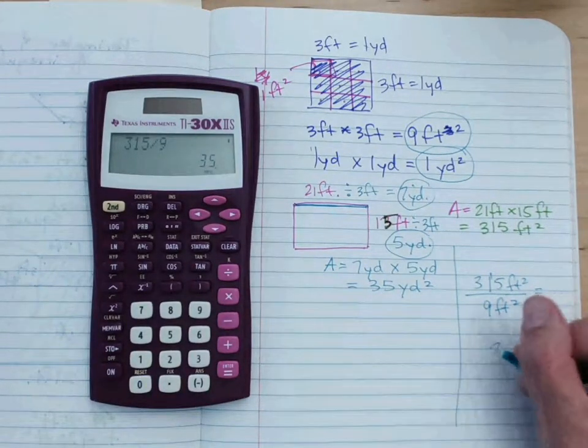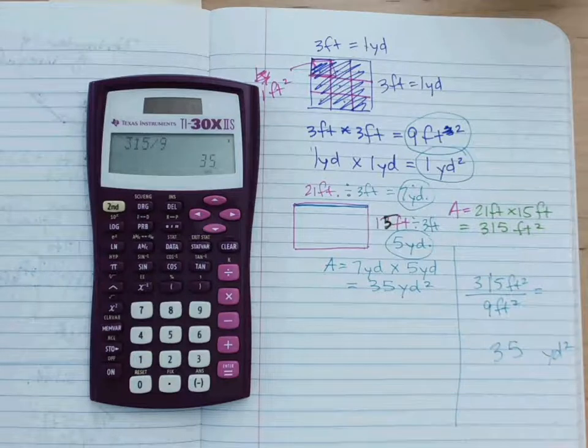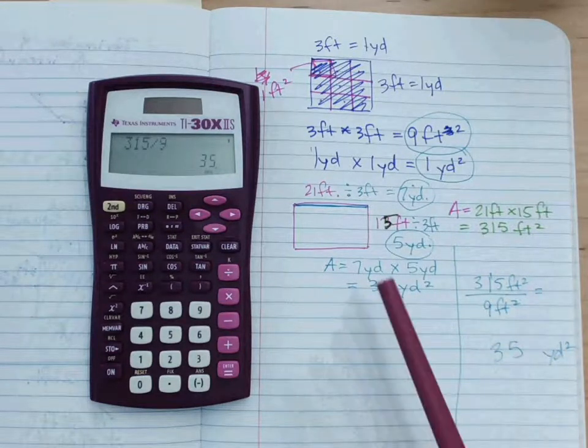What do you get? The same thing, 35 yards squared.